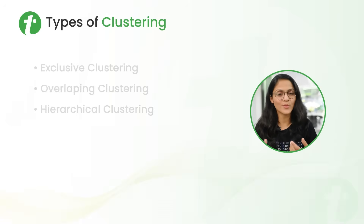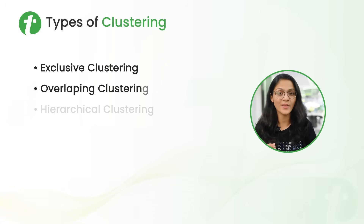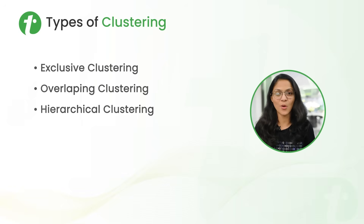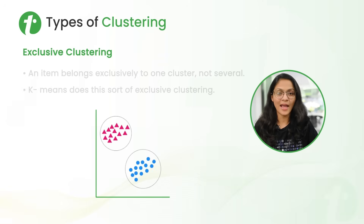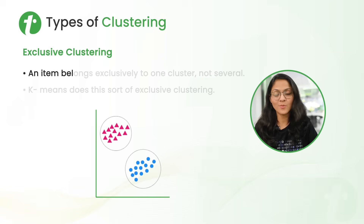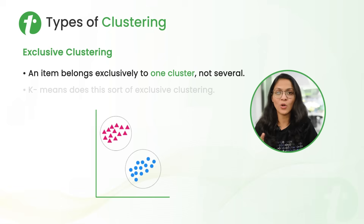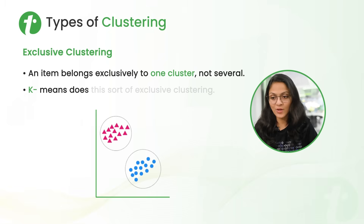Now let's talk about types of clustering. There are three types: first is exclusive clustering, second is overlapping clustering, and third is hierarchical clustering. In exclusive clustering, as you can observe from the diagram, one item belongs to only one group — the triangle data points belong to one group and the circular data points belong to another group. K-means clustering does this type of exclusive clustering.